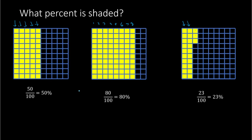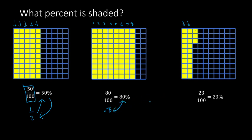Our objective is to convert a fraction, such as 50 over 100 — which is the same thing as one half — to a percent, and also how to convert a percent back to a fraction. We also want to do the same thing with decimals. For example, 0.8 — how do we convert 0.8 to a percent, and vice versa?